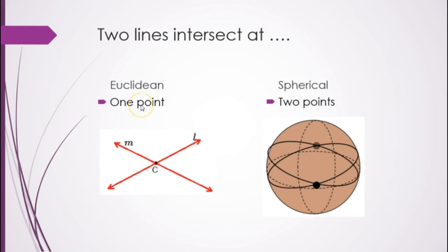In Euclidean, two lines intersect at a point. Here, two lines, which are these great circles, they intersect at two points.